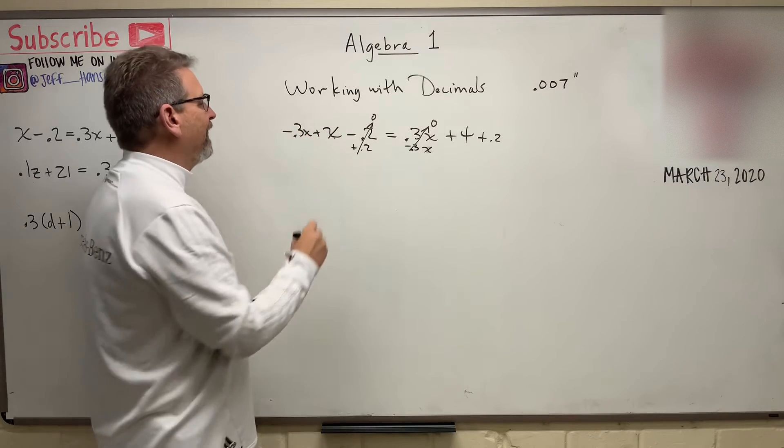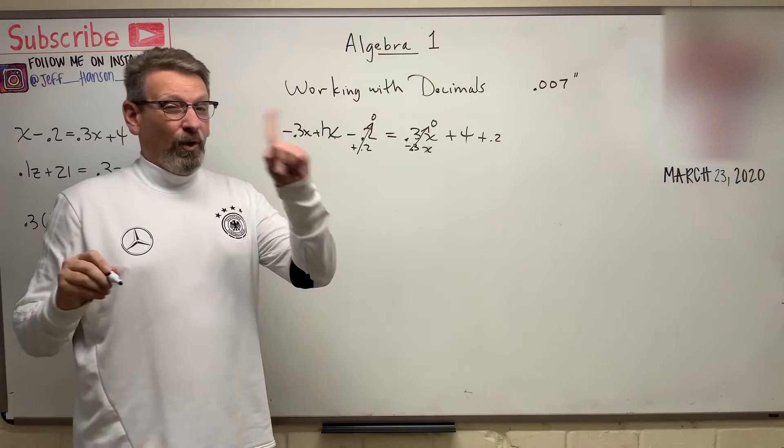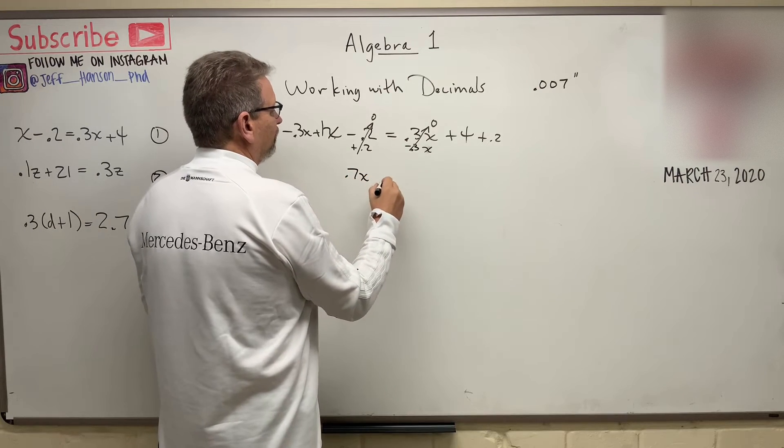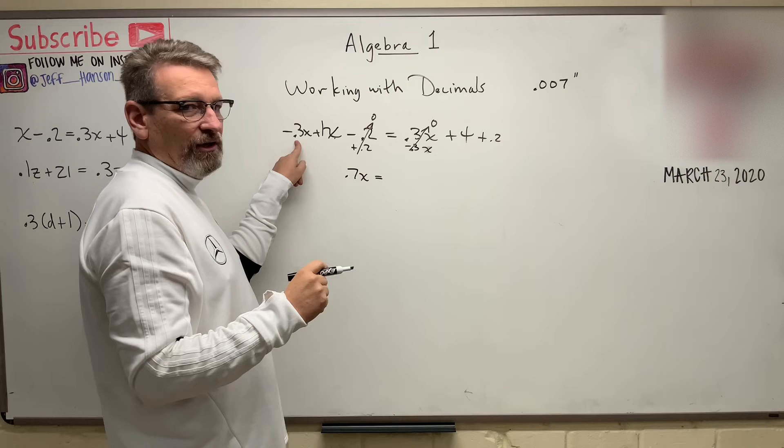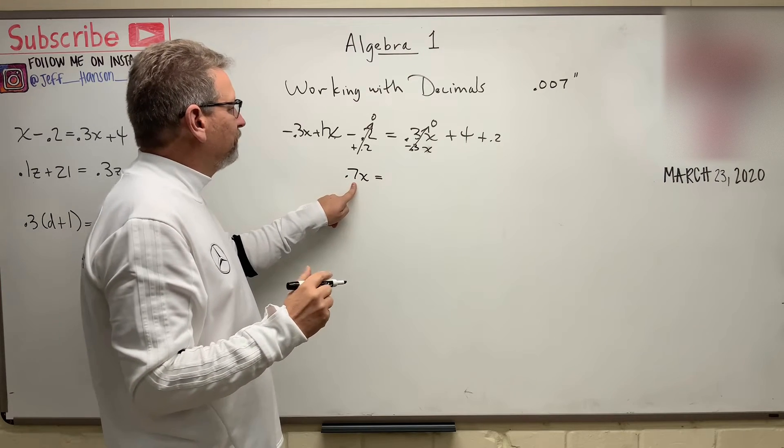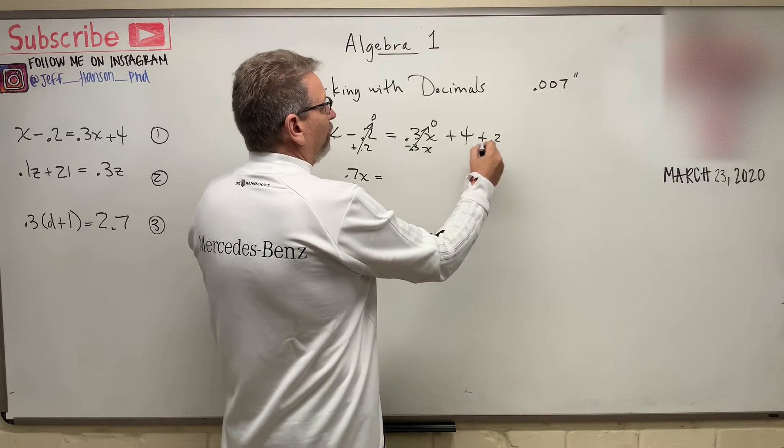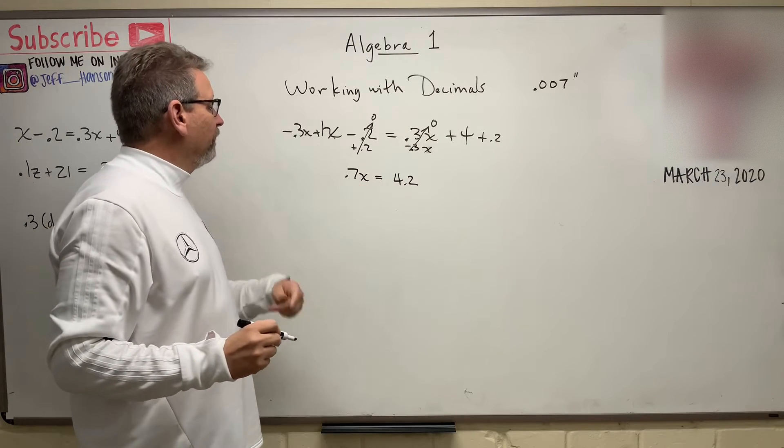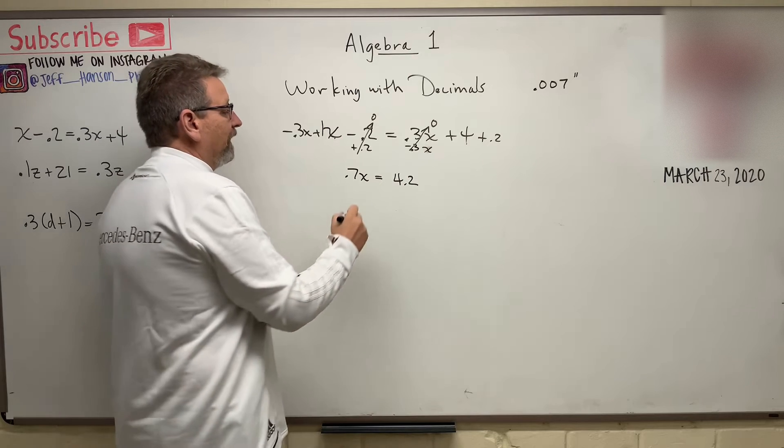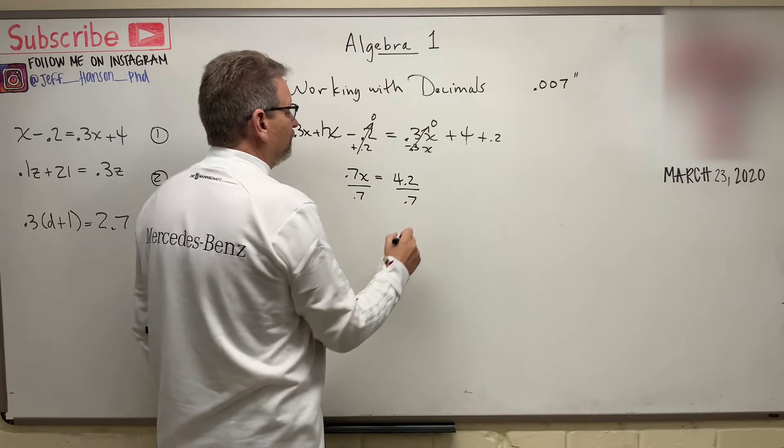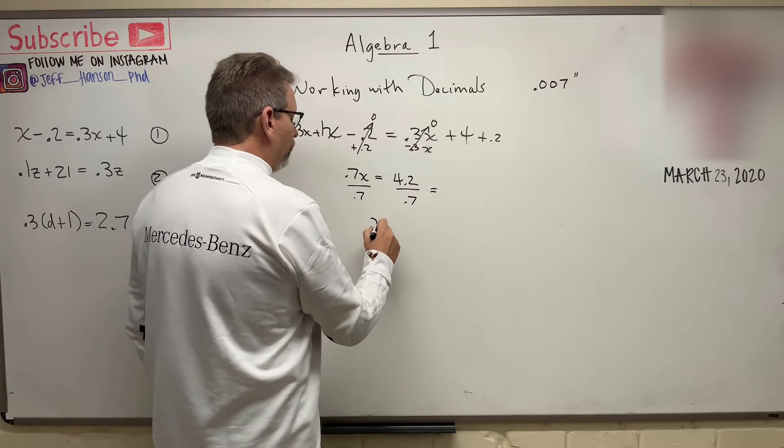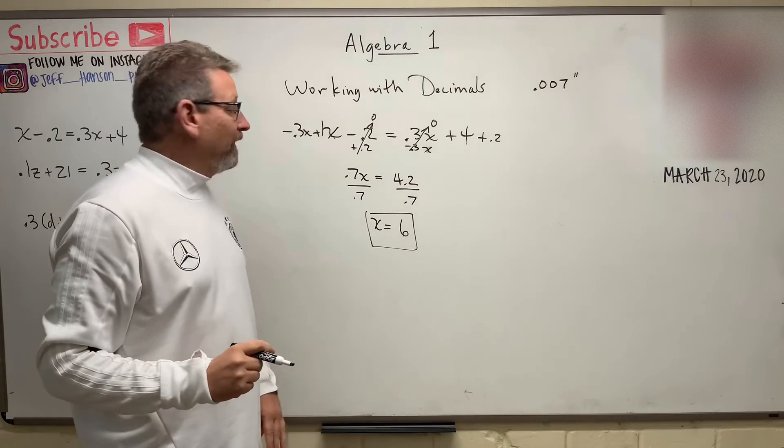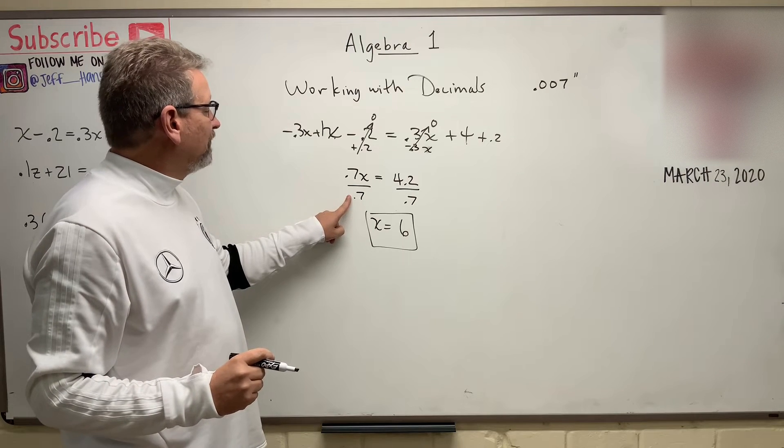So the problem is X minus 0.2 is equal to 0.3X plus 4. Let's first gather up our terms. So let's subtract 0.3X from this side and subtract 0.3X from that side. And then we'll add 0.2 to this side and add 0.2 to that side. So what do we have here? We have X minus 0.3X. Now, X, remember, is just 1. So if I have one whole and I subtract 3 tenths from that, I'm left with 0.7X. Over here, I have 4 plus 0.2. So now I can put this in my calculator and I can solve this. I can actually solve this in my head. I can divide both sides by 0.7. And then I know that that is equal to 6. Well, how did you know that? Well, because I've been in school for a long time and I know how to do division. But if you didn't know that, is there a different way you could have done that?